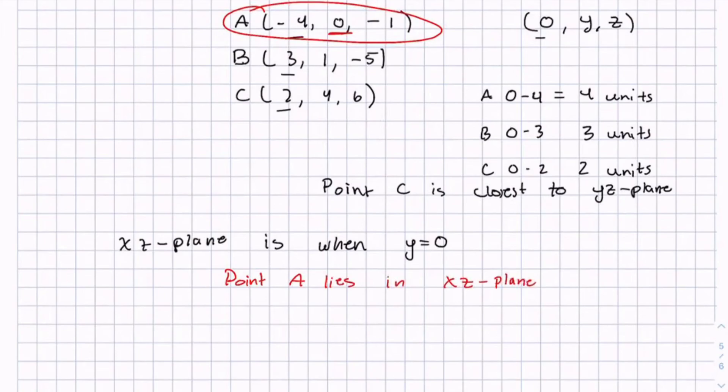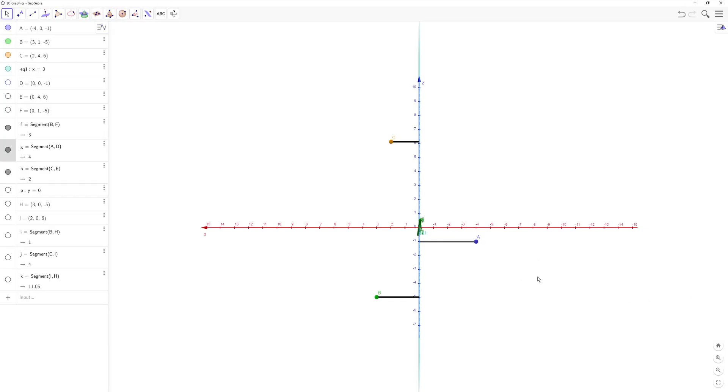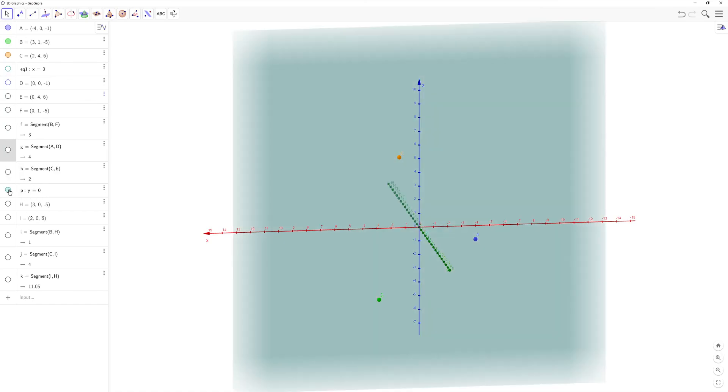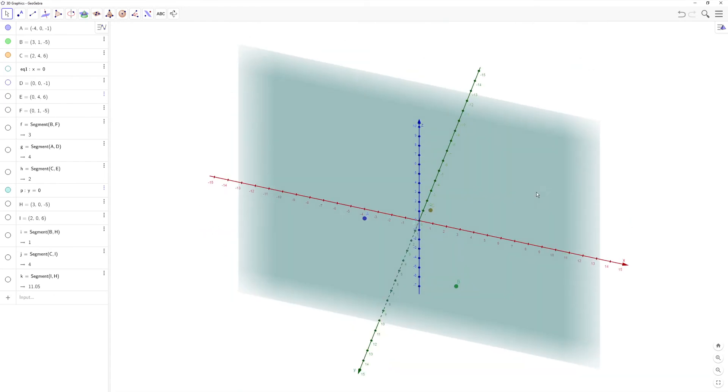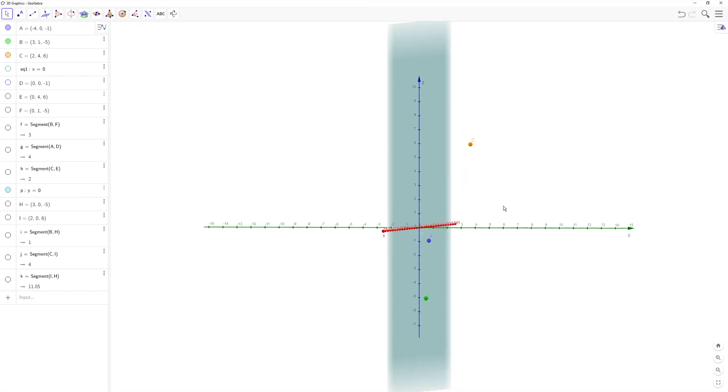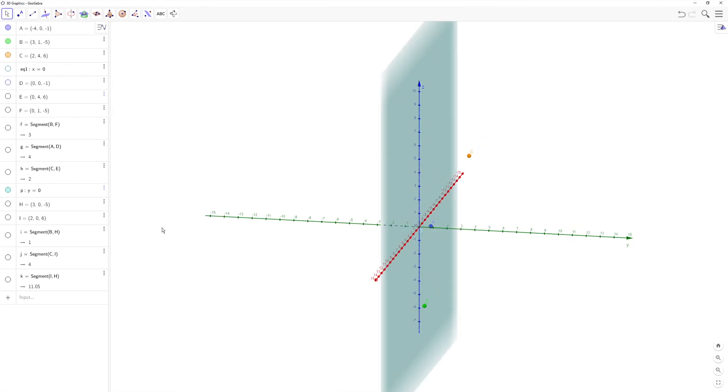And if you go back to our graph, we can visualize this even more. So let's get rid of these segments. And y equals 0. And you can see the xz-plane. And if you look, you can see that point A is in that plane. And C and B are not in that plane. And you can do the same thing if you were trying to find the distances that we did previously.